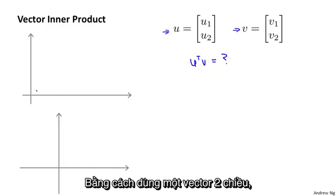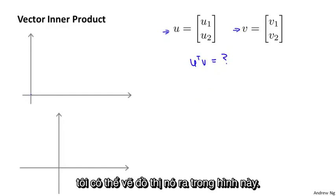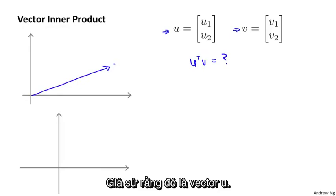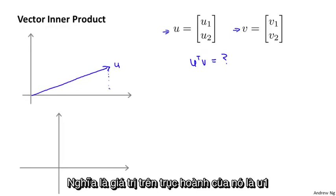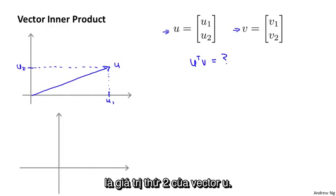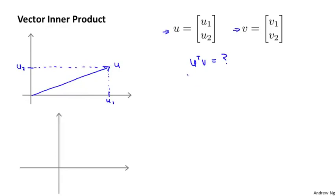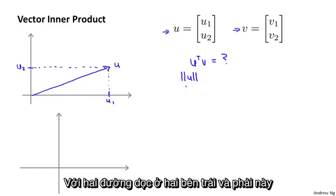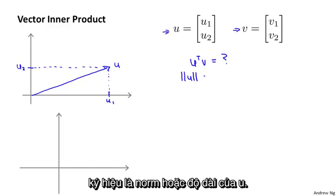U is a two-dimensional vector so I can plot it on this figure. So let's say that's the vector u. What I mean by that is if on the horizontal axis that value takes u1, whatever value u1 is, and on the vertical axis the height is whatever u2 is, the second component of the vector u.